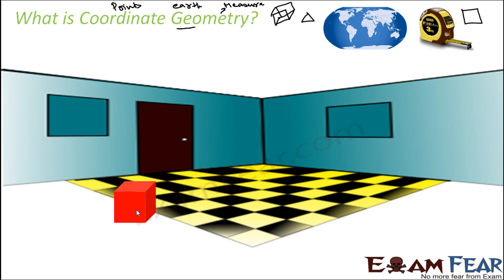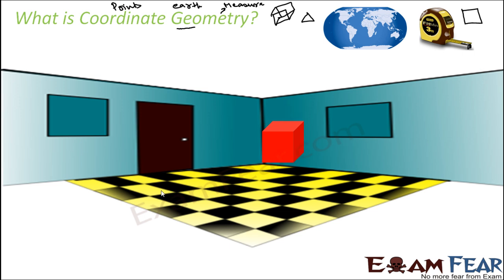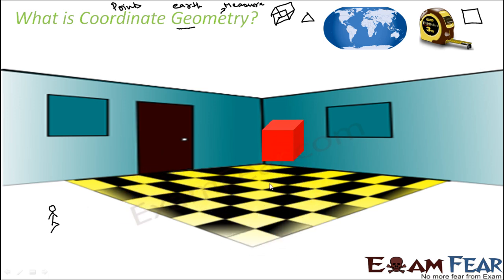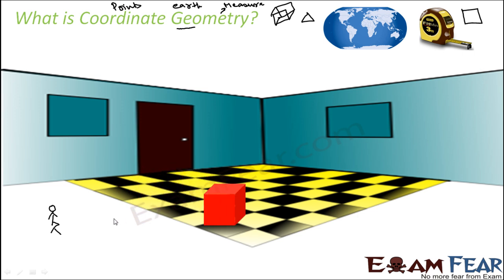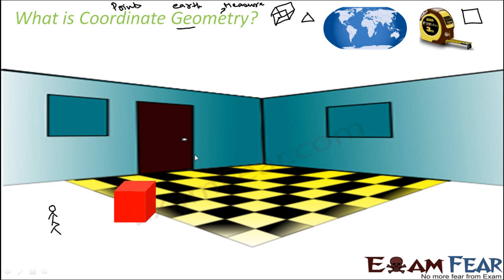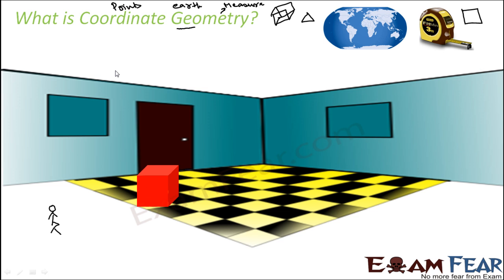For example, this red cuboid — with geometry, I can explain the dimension. I can say the length of this cube is, let's suppose, 10 centimeters. But this cube may move, so with respect to some observer in the room, the position of the cube is changing. Normal geometry fails to explain the position of this cuboid with respect to some object or any person. And thus comes the concept of coordinate geometry, which actually helps in explaining the position of an object.